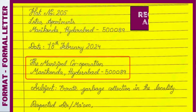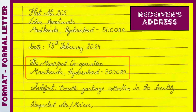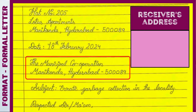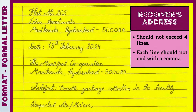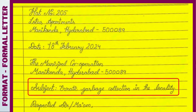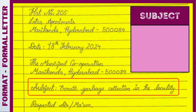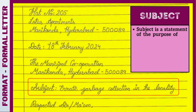Next is the receiver's address. The receiver's address should not exceed four lines. Each line should not end with a comma. Next is the subject. The subject is a statement of the purpose of the letter.